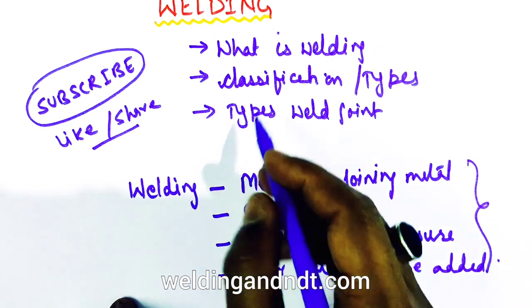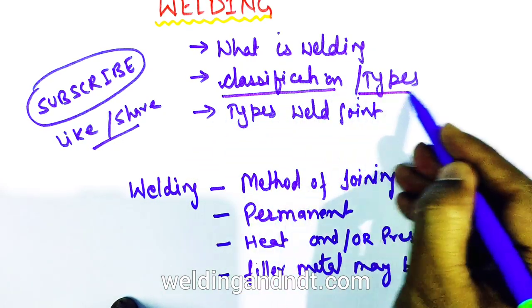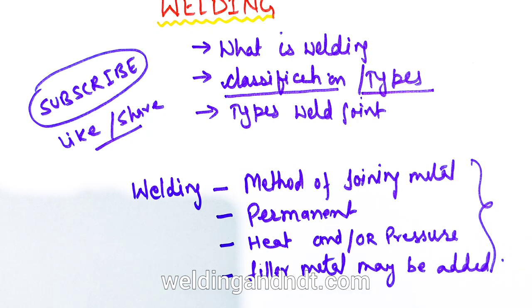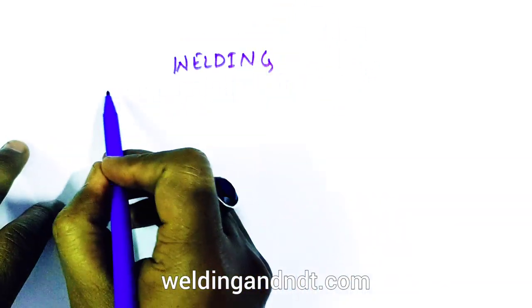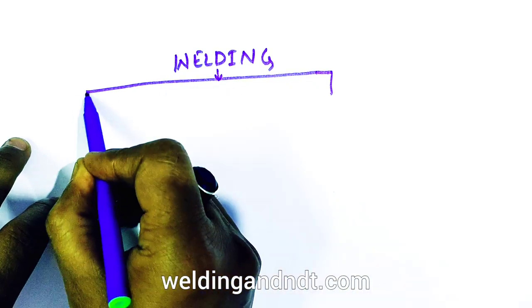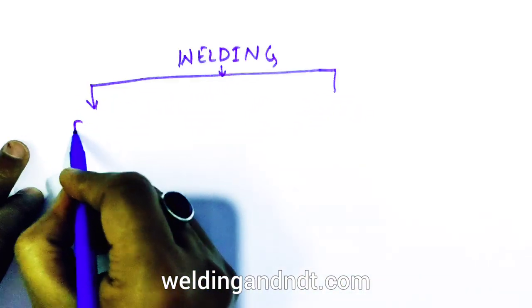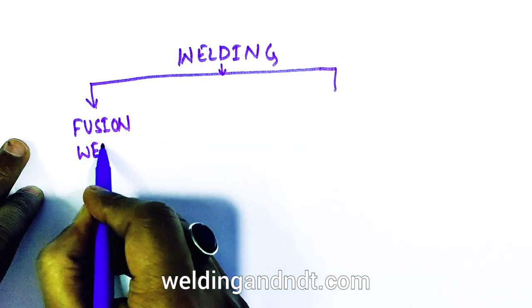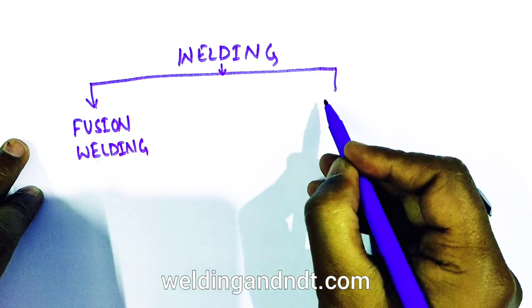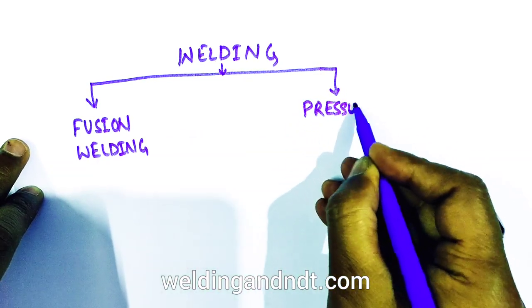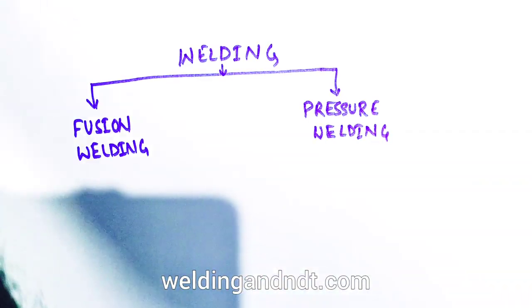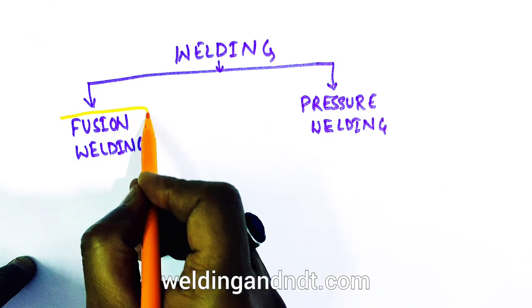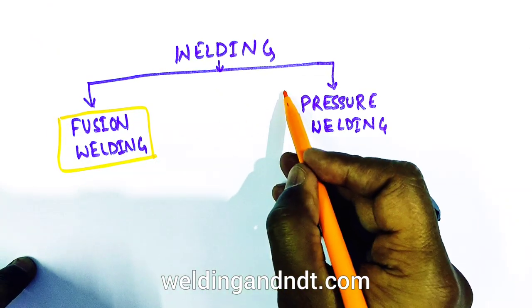Now we will learn how welding processes are classified, or the different types of welding. Welding is broadly classified as fusion welding process and pressure welding process. I will explain the difference between these two terms.